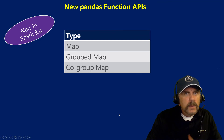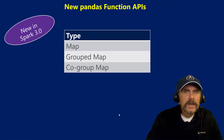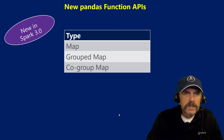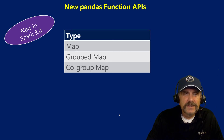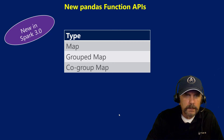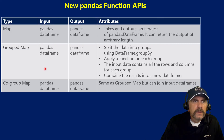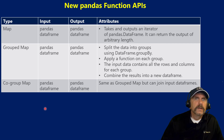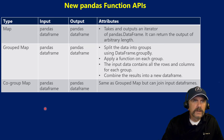Now we want to talk about new pandas function APIs, which is also new in Spark 3.0 — functionality that just did not exist before. We have map, grouped map, and co-group map. The first thing to notice in the new pandas function APIs is that they leverage data frames.